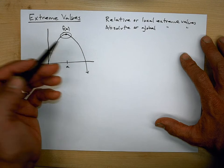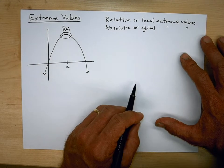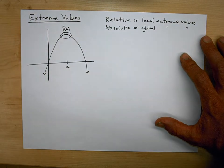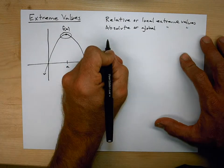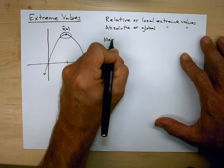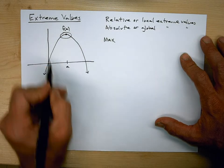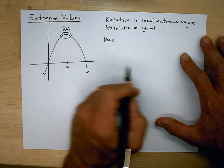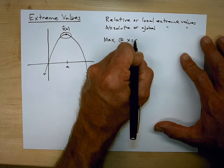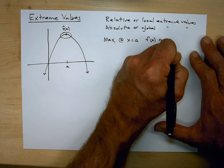One thing that hopefully makes sense is: if it's an absolute extreme value, then it's also a relative extreme value. So we have this max at x equals a. It's a relative max, and in this case it's actually also an absolute or global max because if this is a parabola, then this is going to be the highest point anywhere on the parabola. So that will be at x equals a, and f of a is that maximum value.